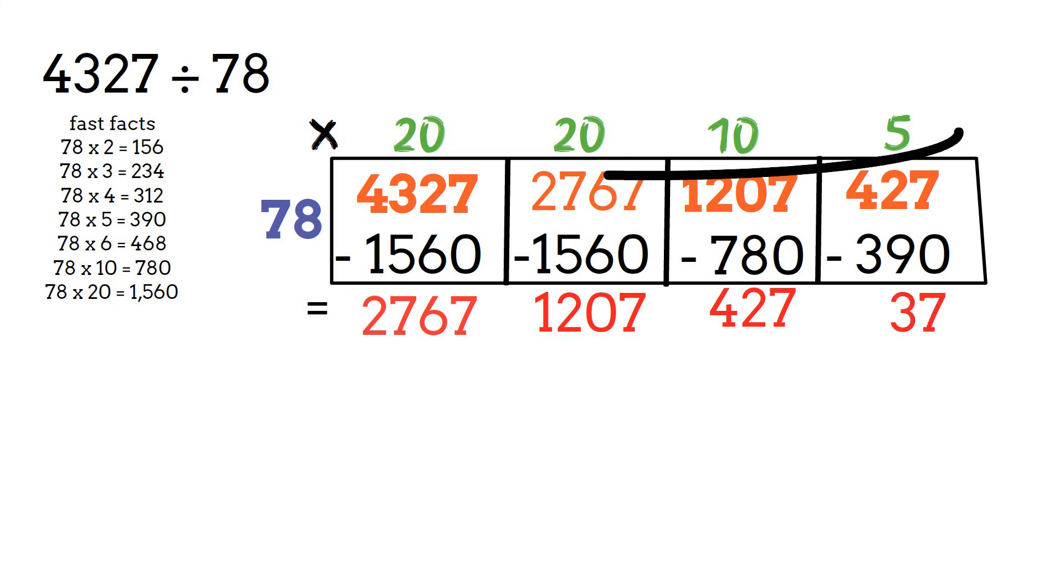78 cannot go into 37. Add all of the numbers on top. 20 plus 20 plus 10 plus 5 equals 55 and there is a remainder of 37.